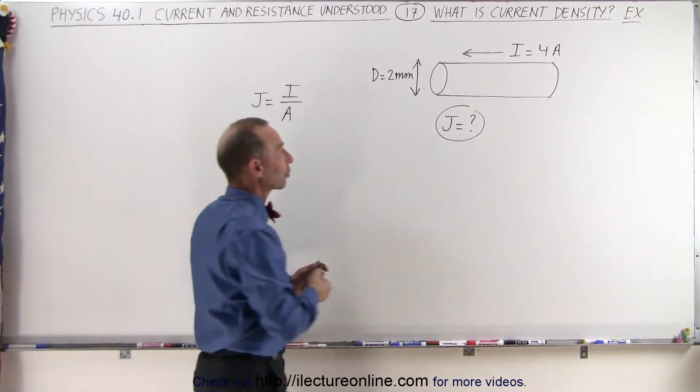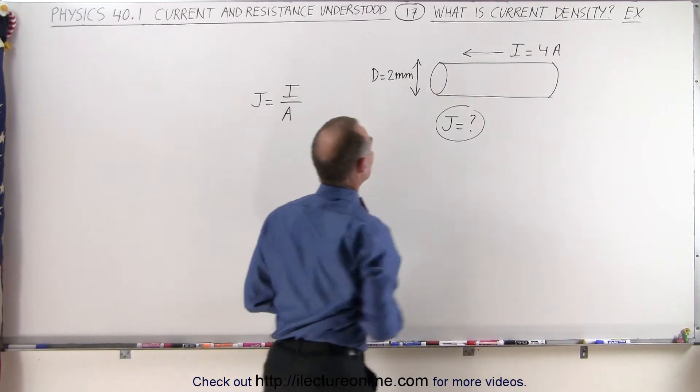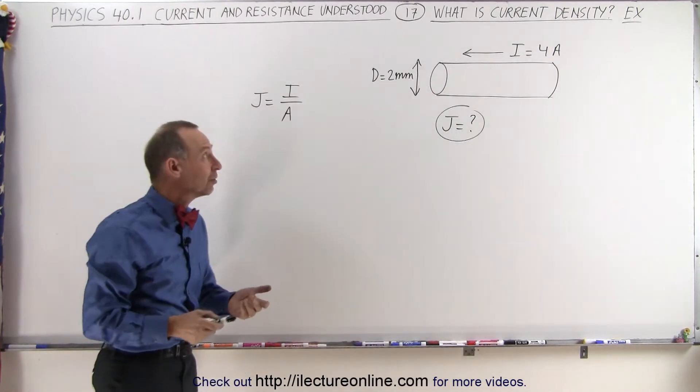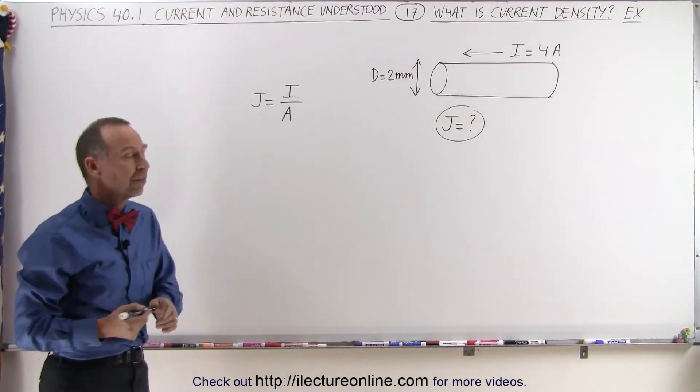Let's say we have a conductor here that has a current of 4 amps and the diameter of the conductor is 2 millimeters. What would be the current density?